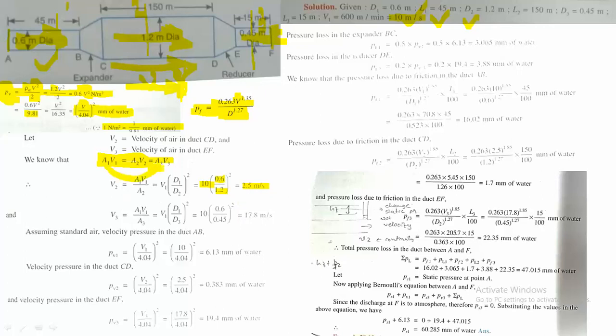Similarly, using A1V1 = A3V3, we get V3 = V1 × (D1/D3)². V1 is 10, D1 is 0.6, D3 is 0.45. The velocity in EF section becomes 17.8 meters per second. Velocity calculations for all sections are now complete.